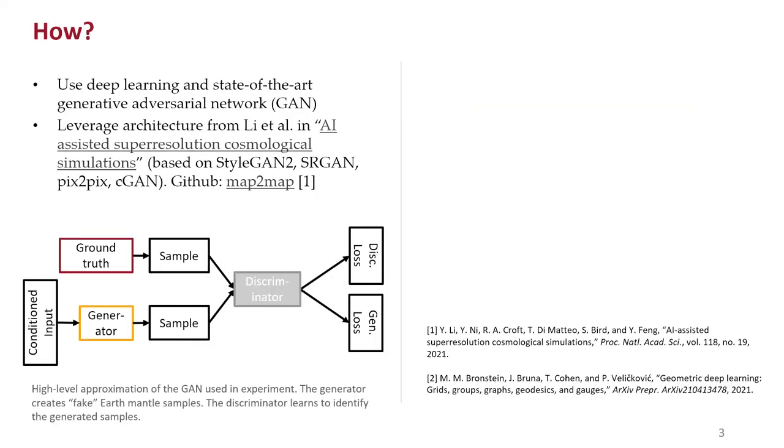How do we build the surrogate model of the Earth's mantle convection dataset? We use deep learning and state-of-the-art generative adversarial networks, a.k.a. GANs. In this work, we leverage the architecture from Lee et al., from their paper, AI-assisted super-resolution of cosmological simulations. You can find the link in the GitHub page there. It's really a great piece of work.